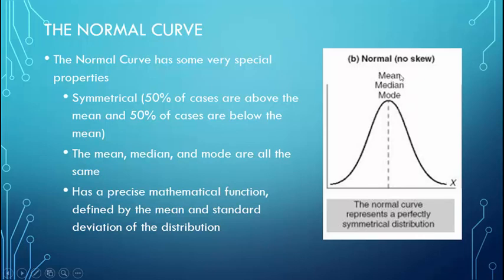They are all the same thing in a normal curve. So when you find the mean, it's the same as the median, it's the same as the mode. And this normal curve has some precise mathematical functions that we use in order to do a lot of our inferential statistics.